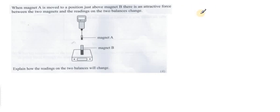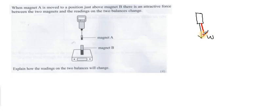For magnet A: its weight acts downward — this is the original weight shown on the digital spring balance in the absence of magnet B. But in addition to the weight, there is an attractive magnetic force Fm also acting downward. Because two forces are now acting downward, the apparent weight of magnet A increases, so the reading of the digital spring balance is going to increase.